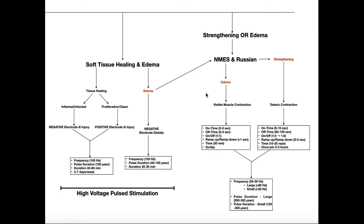Why would you want to see a muscle contraction if you're trying to treat edema? Well, suppose that the edema was in the distal lower extremity. We know that the gastrocnemius and other muscles in the lower leg act as a skeletal muscle pump, and they help move that fluid back up to the heart. So that's why we would use NMES and Russian stimulation to treat edema — we're basically stimulating the skeletal muscle pump. For edema, the on time and off time are the same: two to five seconds each, with an on-off ratio of one to one. There should also be a ramp up and a ramp down time greater than one second, and the duration can be 30 minutes done twice a day.